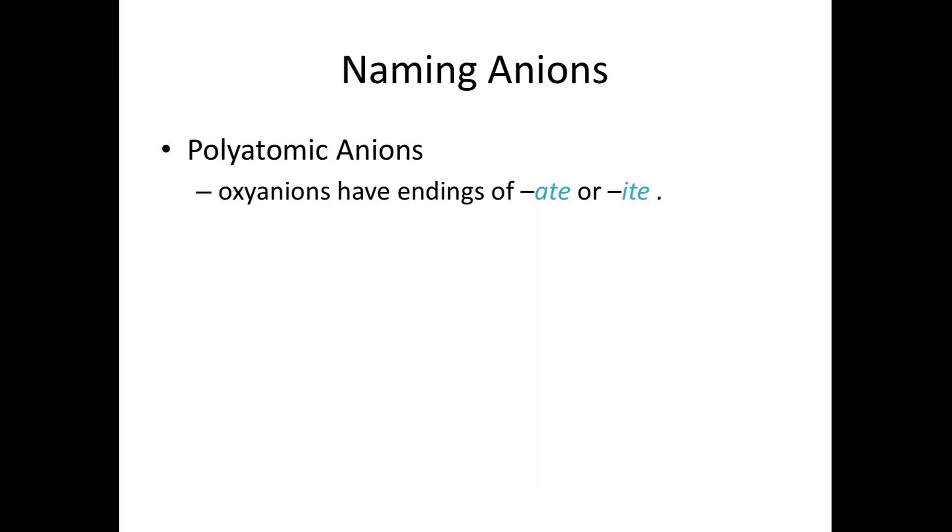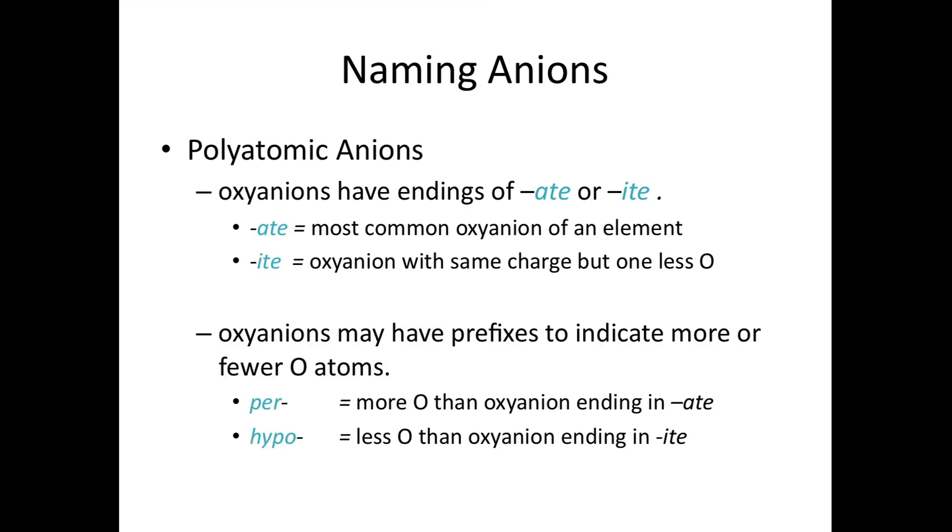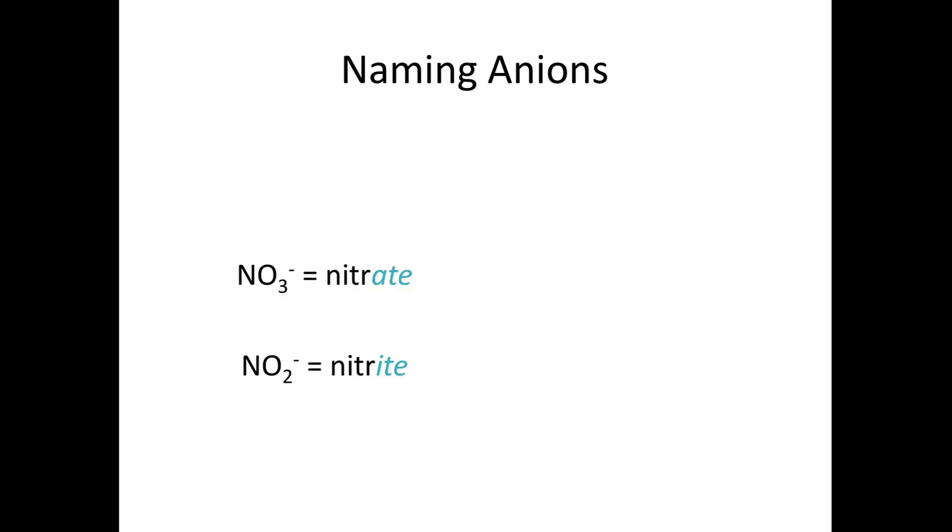If you do have to memorize the names of polyatomic ions, I'm going to show you a trick to help you with naming polyatomic oxy anions. These all have endings of either -ate or -ite. The ending -ate is given to the most common oxy anion of an element. The ending -ite is given to the oxy anion with the same charge but one less oxygen atom. You can also use the prefixes per- or hypo- to indicate even more oxygen than the -ate ending or even less oxygen than the -ite ending.